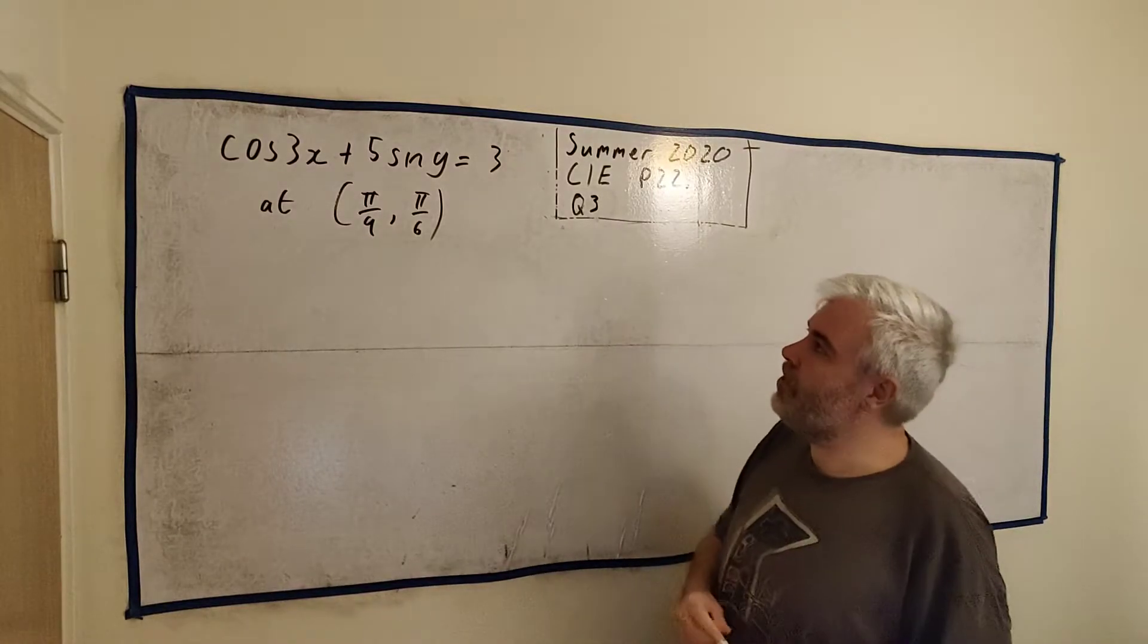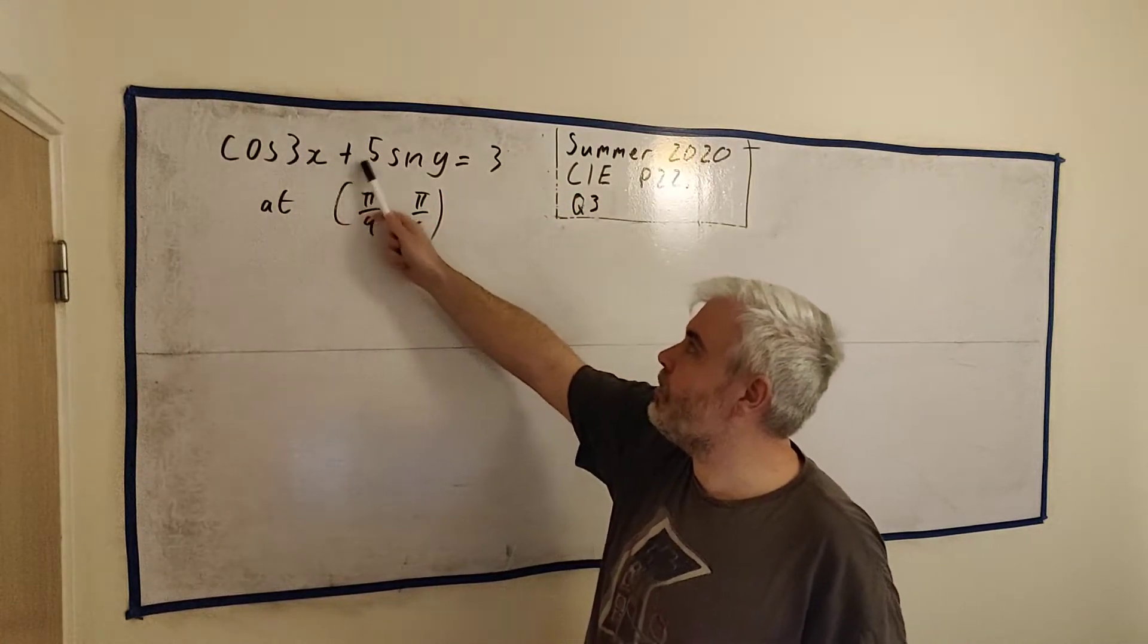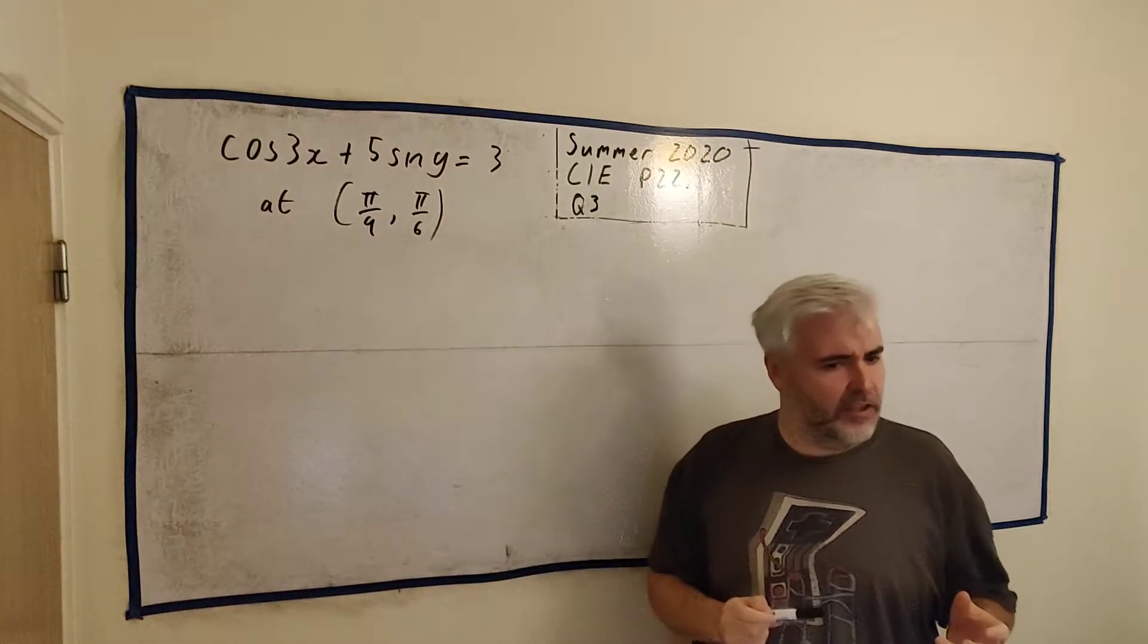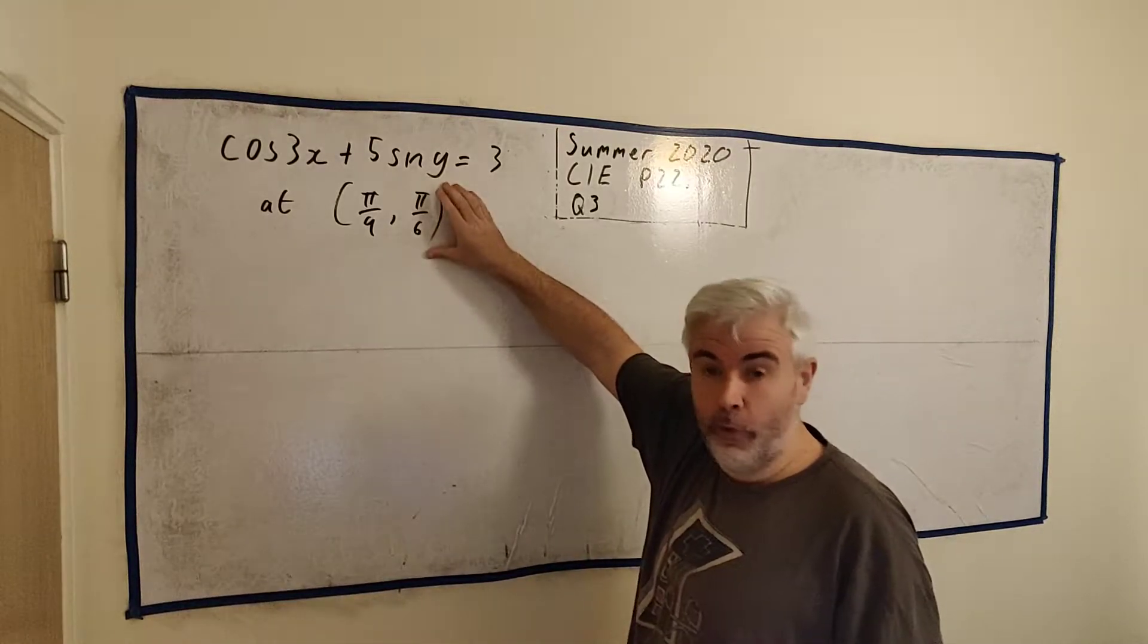In this question, they give us this equation here, cosine of 3x plus 5 sine of y is equal to 3. And they tell us to find the gradient of the curve at this point.